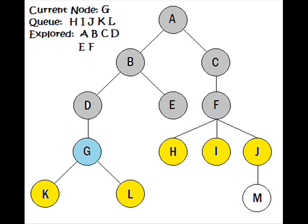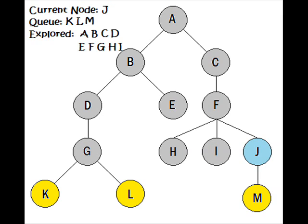Now we're on level 3. Starting with node G, we put K and L in the queue. We visit H — no nodes added since it has no children — and likewise for node I. Continuing to node J, we add M to the queue. For the last level of this tree, we visit K, then L, and finally M.